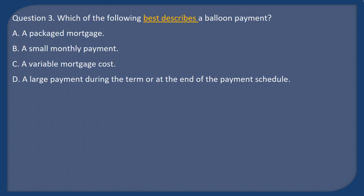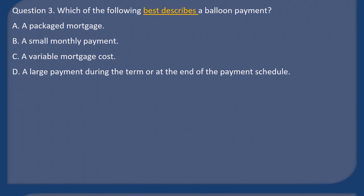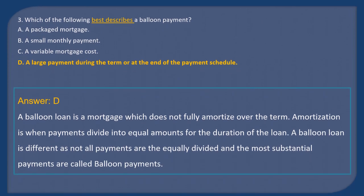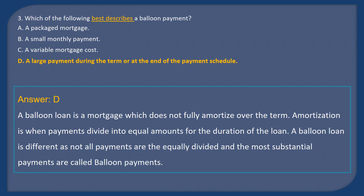Question 3: Which of the following best describes a balloon payment? A) Package mortgage, B) A small monthly payment, C) A variable mortgage cost, D) A large payment during the term or at the end of the payment schedule. Answer: D. A balloon loan is a mortgage that does not fully amortize over the term. Not all payments are equally divided, and the most substantial payments are called balloon payments.